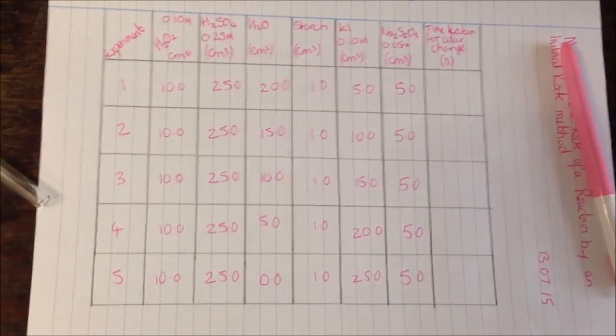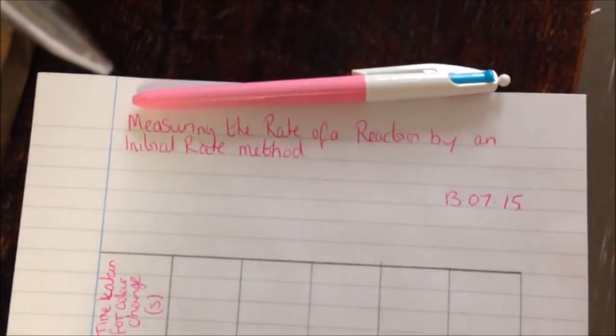So now we're going to be looking at measuring the rate of reaction by an initial rate method, and this is for an iodine clock.